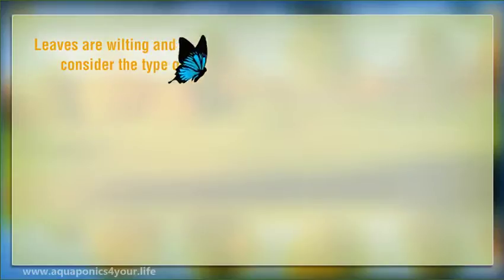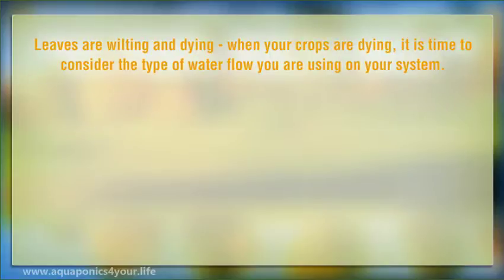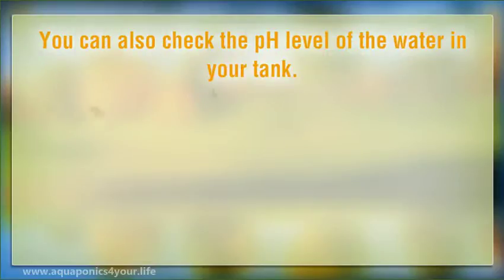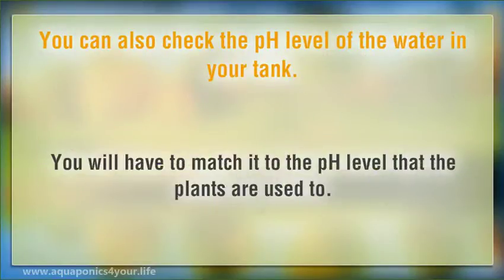Leaves are wilting and dying. When your crops are dying, it is time to consider the type of water flow you are using in your system. Especially if it is a continuous water flow, chances are your plants aren't getting enough oxygen, so try switching to the hourly or the ebb and flood method. You can also check the pH level of the water in your tank — you will have to match it to the pH level that the plants are used to.